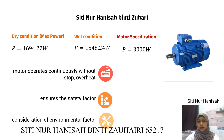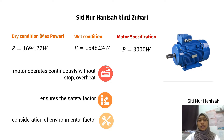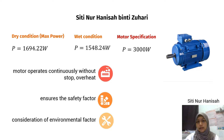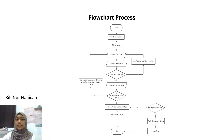We have done motor selection by calculating two conditions: dry condition and wet condition. The maximum power is 1694.22 W at dry condition. For motor specification, we chose a motor with 3000 W, because when the motor operates continuously without stopping it will overheat, and to ensure the safety factor we chose a motor with higher power. We also considered environmental factors such as drag force, wind speed, and corrosion.